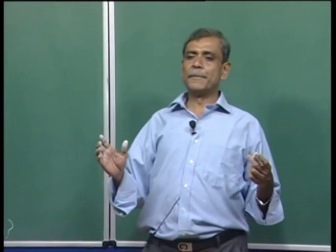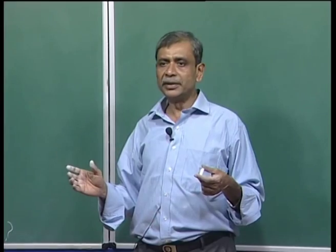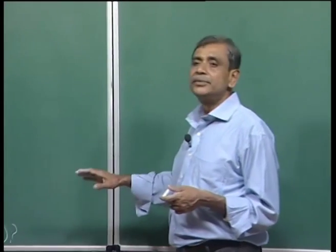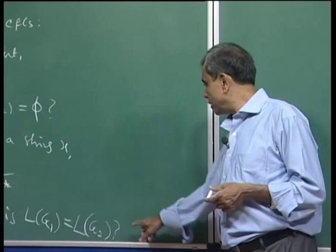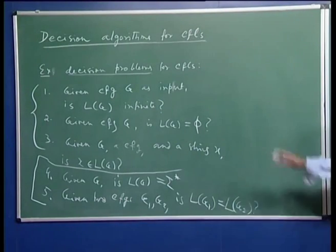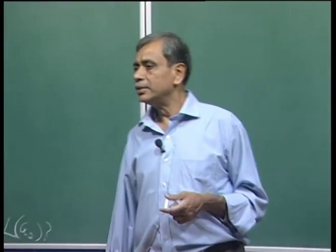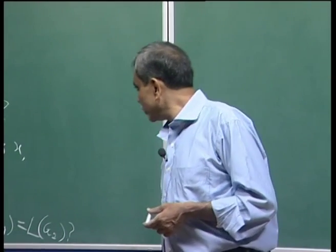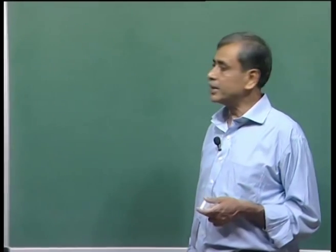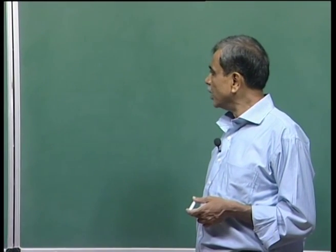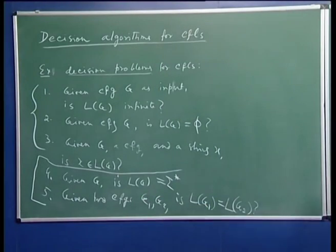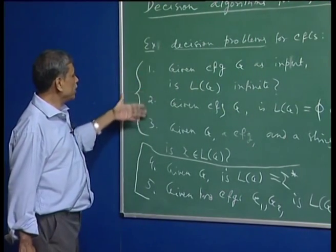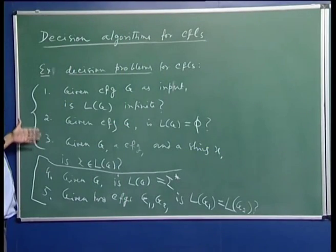The question of whether L(G) = Σ* seems innocuous, but there is no algorithm for solving this decision problem. Similarly, given two context-free grammars, determining whether they generate the same language is also undecidable. Such decision problems are called undecidable problems; when we study Turing machines, we will go deeper into the class of undecidable problems. For now, let us provide the positive results — algorithms for problems 1, 2, and 3.